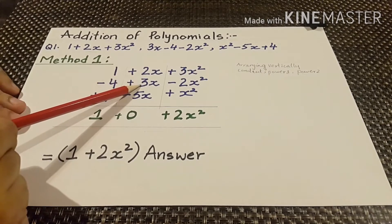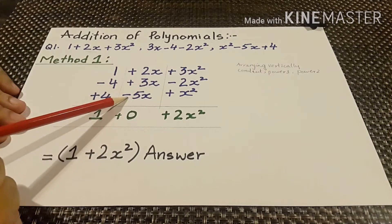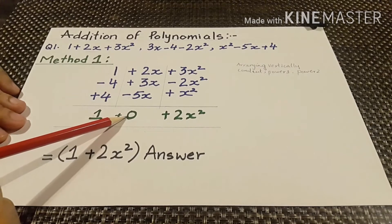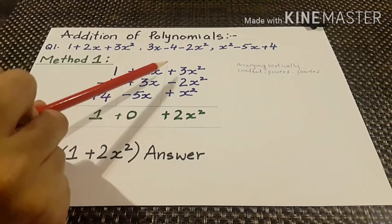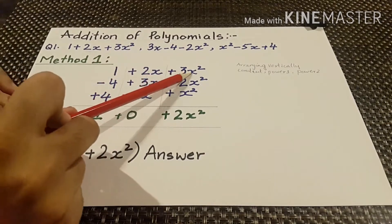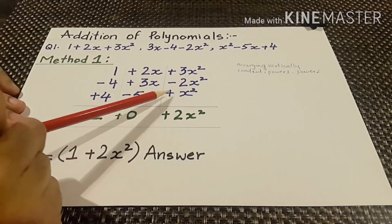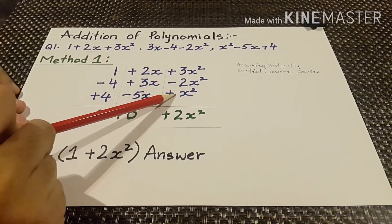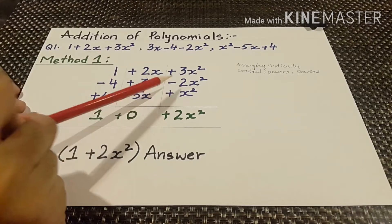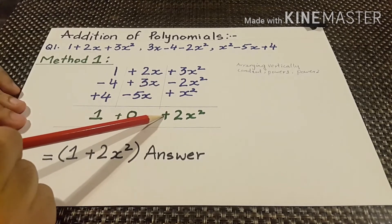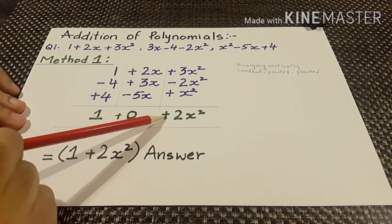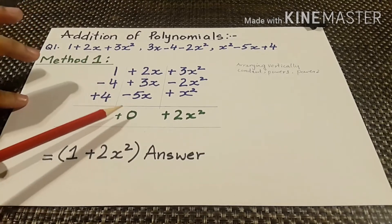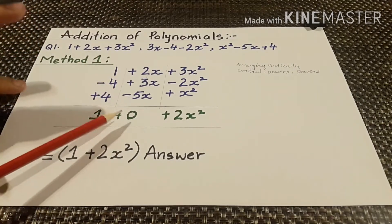In the second column: 2 plus 3 is 5, minus 5 — this cancels out and we are left with 0. In the third column: 3x squared minus 2x squared plus x squared — 3 plus 1 is 4, and 4 minus 2 is 2 — so we get positive 2x squared.